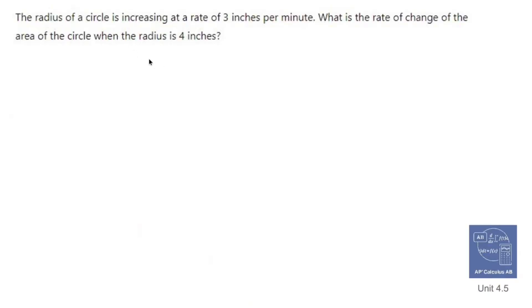The radius of a circle is increasing at a rate of 3 inches per minute. What is the rate of change of the area of the circle when the radius is 4 inches? Alright. So let's write out our formula for the rate of the area of a circle. A equals pi r squared.